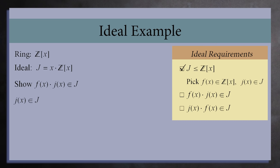Since j(x) is in j, it has a constant term of zero. This means we can factor j(x) as x times k(x) for some other polynomial k. Substituting this in and rearranging, we get x times f(x) times k(x).